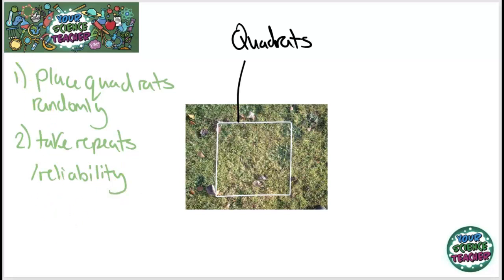And the last thing that they might ask you about when quadratting is you also need to be consistent with how you select your species. So what I mean by that is if it's touching the outside of your quadrat, if you include it in one reading, you include it in all of your readings.